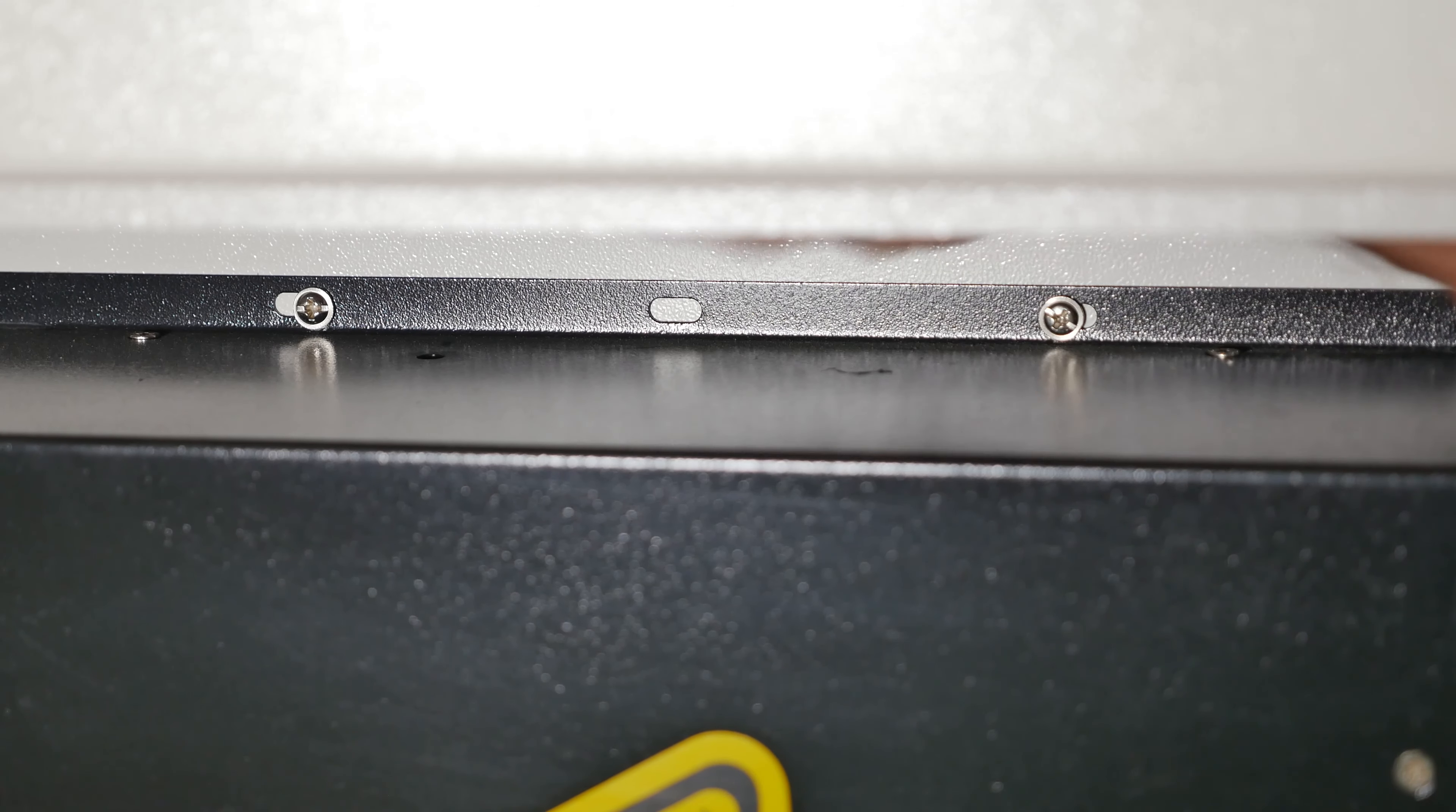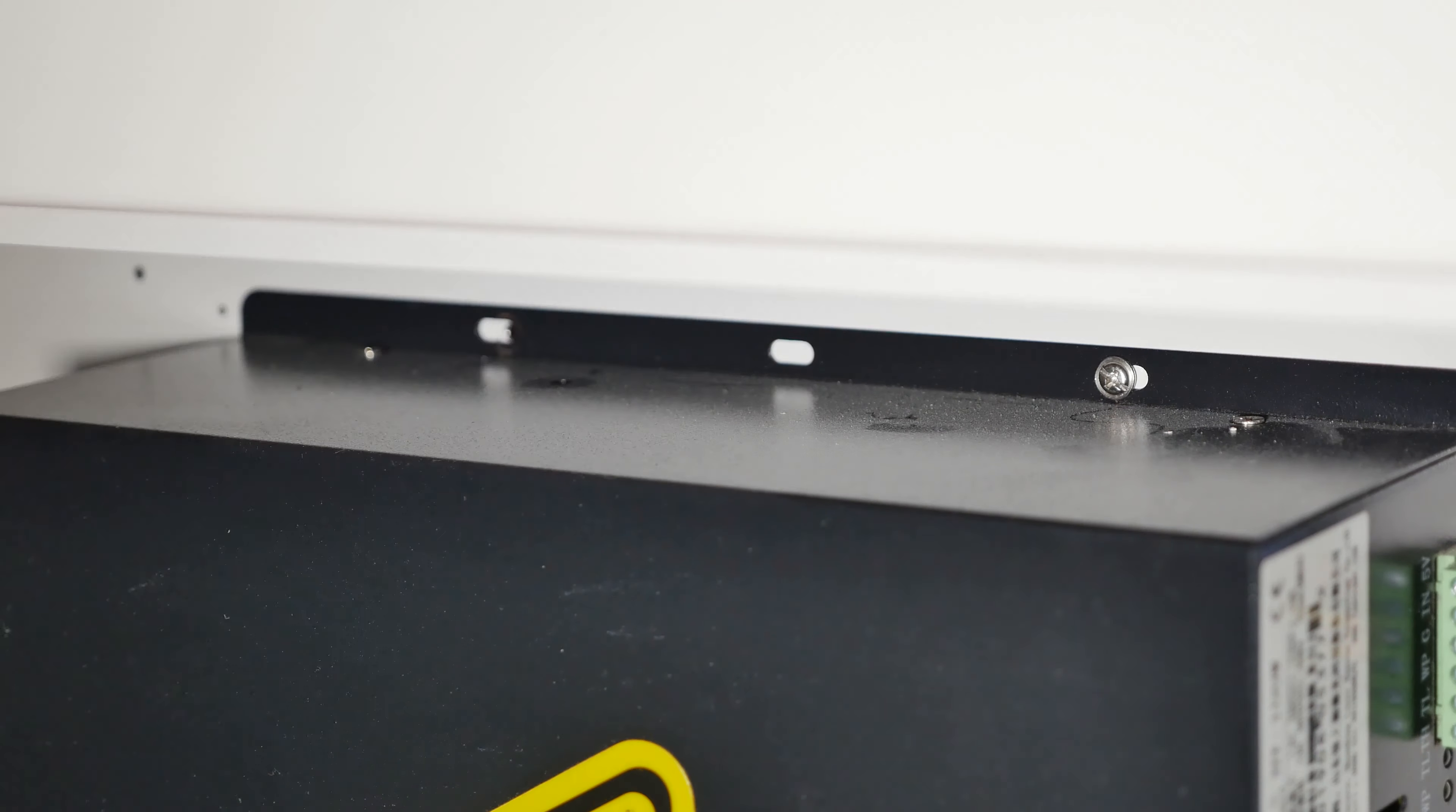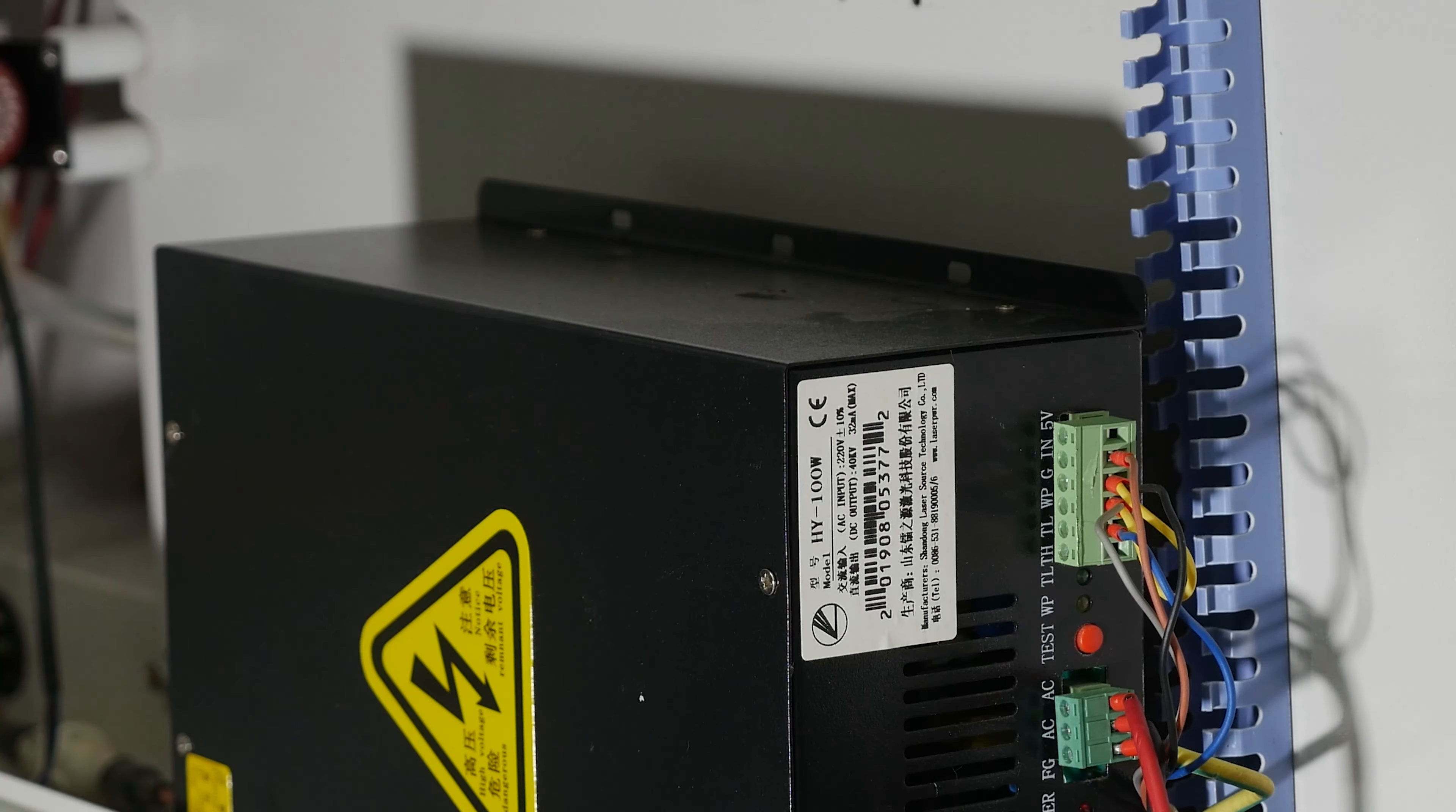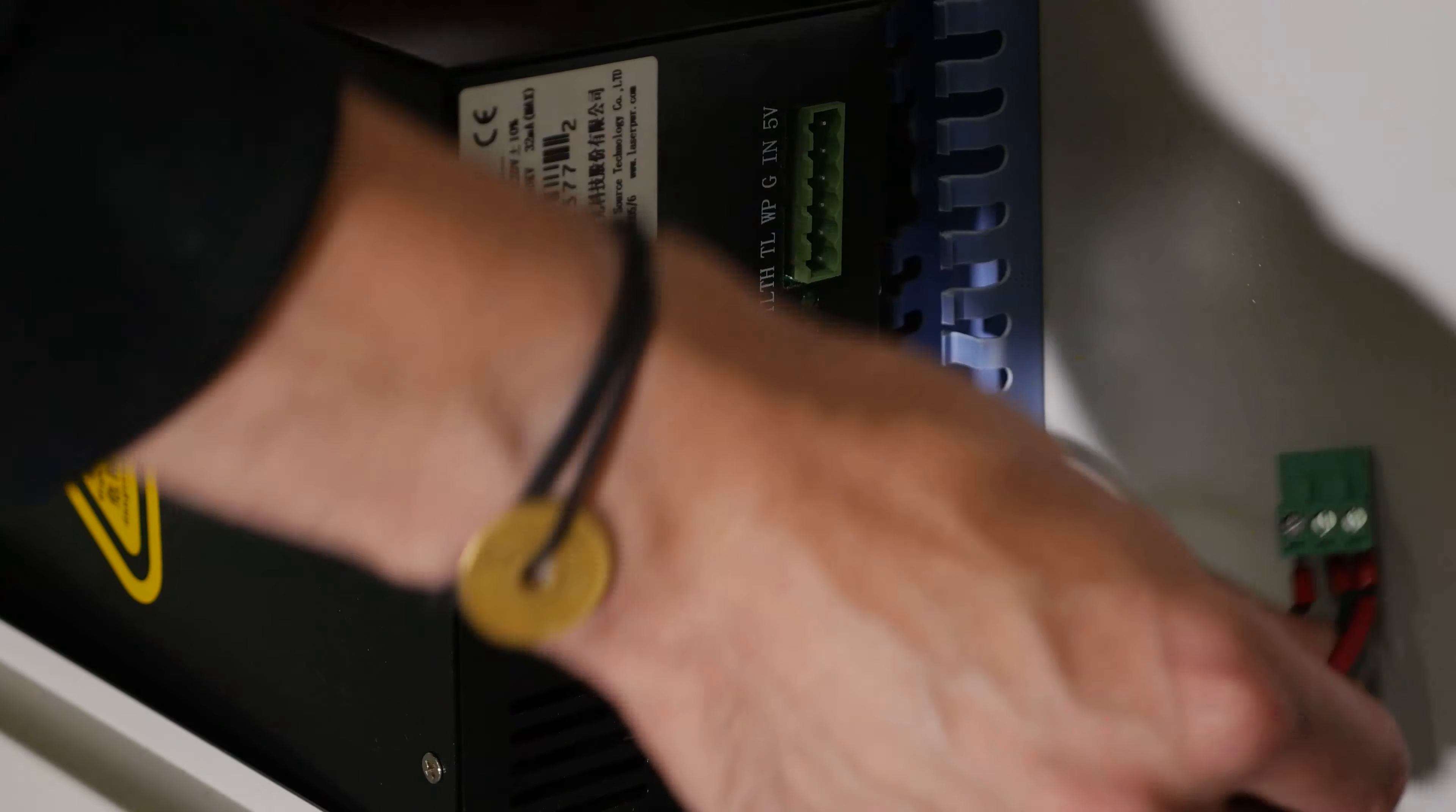The high voltage unit is attached to the wall with screw nails. Unscrew the top screws of the high voltage unit. Unscrew the bottom screws of the high voltage unit and remove it. Remove the power supply terminal and the control terminal.